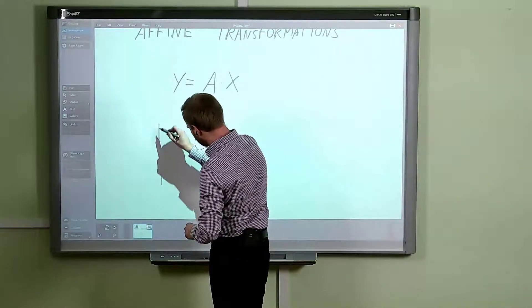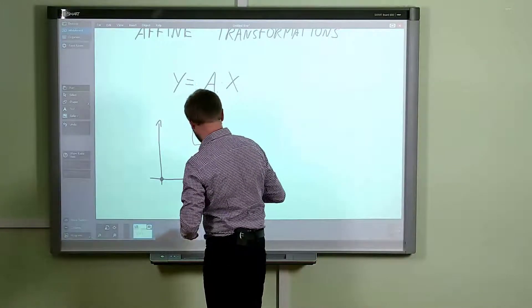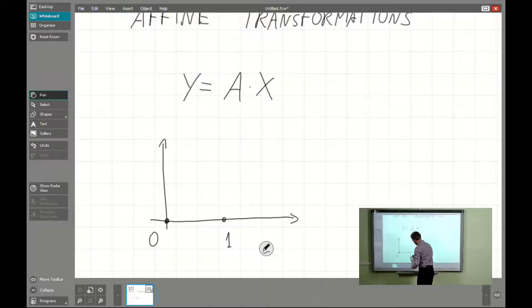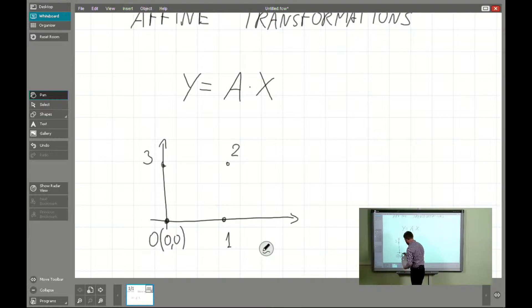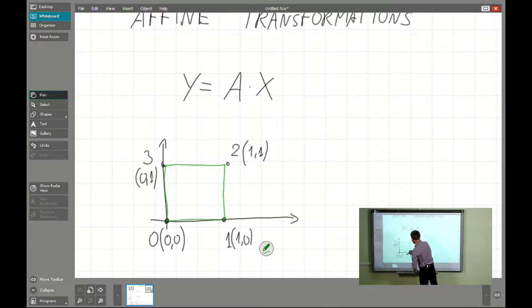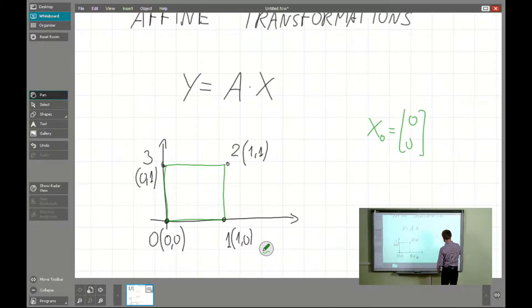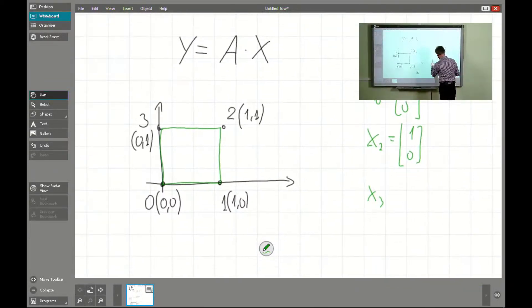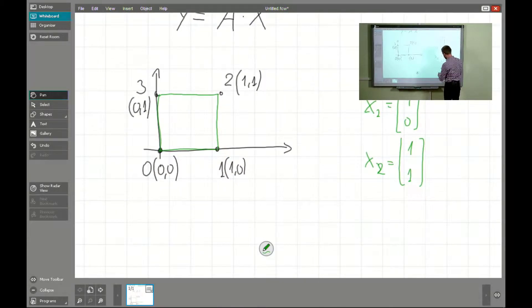We'll be speaking about a simple square with points zero, one, two, and three. Those points will be given by the coordinates: x0 = (0,0), x1 = (1,0), x2 = (1,1), and x3 = (0,1).